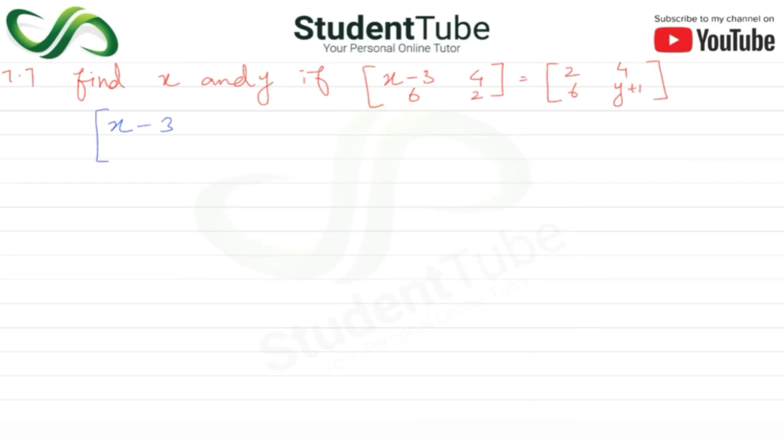This is equal to the matrix 2, 4, 6, and y plus 1. Since the matrices are equal, we put corresponding elements equal. Then for the value of x...